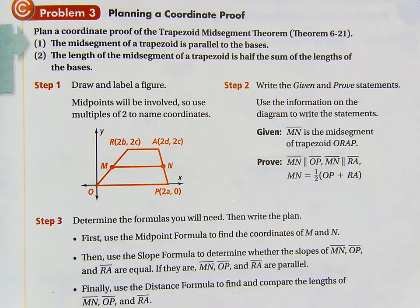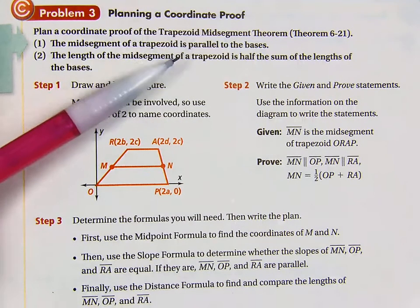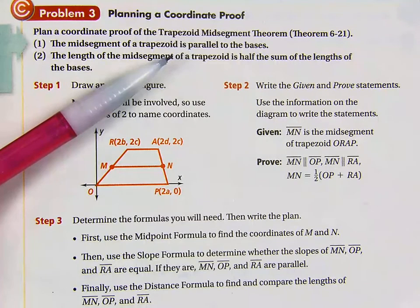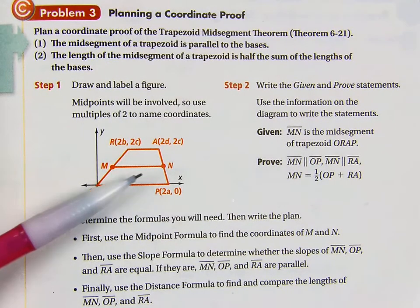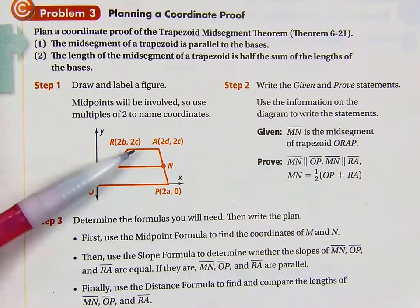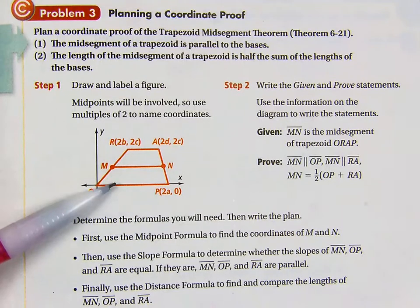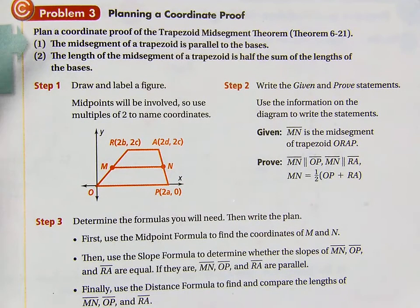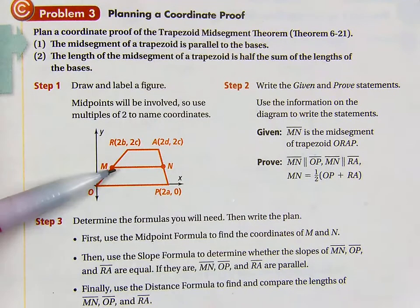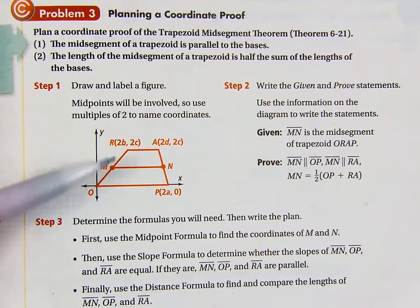— that's the segment that joins the midpoints of the legs of a trapezoid — is parallel to the two bases. So if MN is a midsegment, it's parallel to segment RA and segment OP. And the theorem also says the length of the midsegment of the trapezoid is half the sum, so its measure is half of those two bases added together.